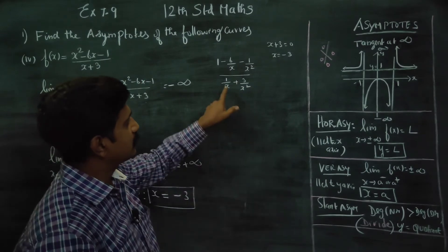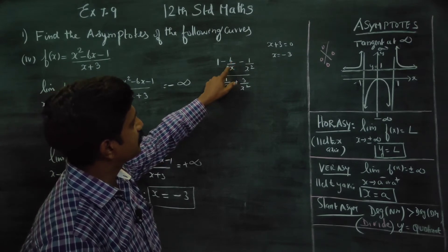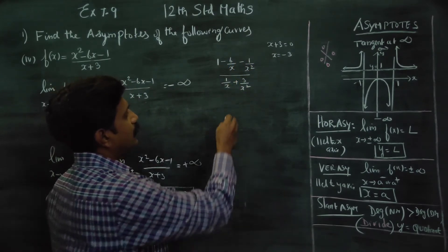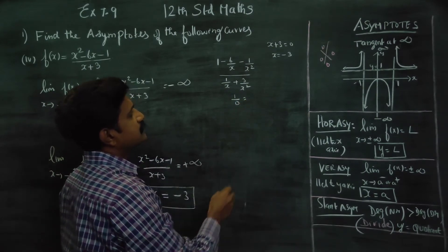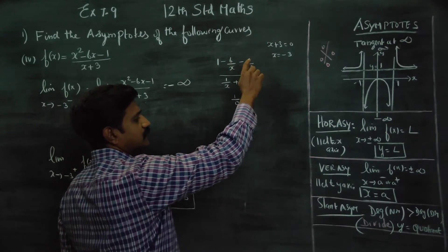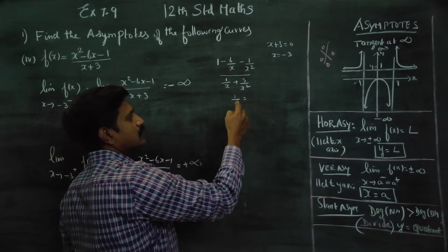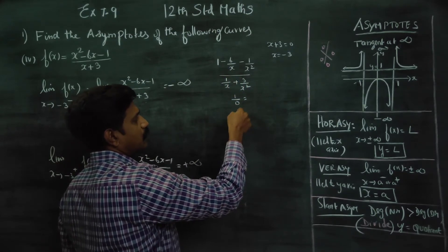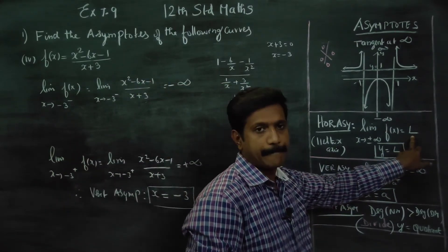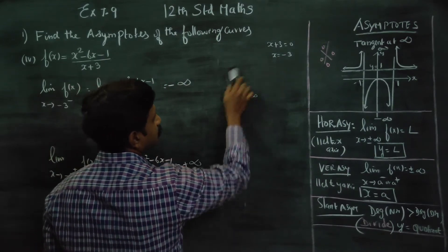After dividing numerator and denominator by x squared, all the terms with x in the denominator become zero as x tends to infinity. This is zero, this is zero, this is zero. One divided by zero becomes infinity. You must get a finite number for a horizontal asymptote to exist. That is why you do not have a horizontal asymptote here.